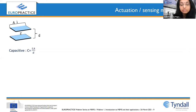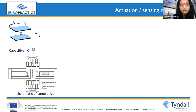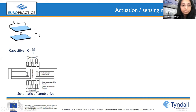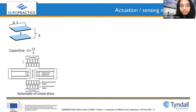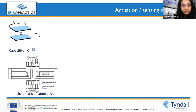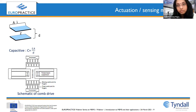Capacitive actuation or sensing is very commonly used in the comb drive structure. In an accelerometer, if this mass moves due to acceleration, each tooth pair acts as one capacitor, and all of them add up in parallel, giving good sensitivity. If the mass moves in the vertical direction, there is a change in overlap area, thereby a change in capacitance, which is taken for signal processing to get the sensing or actuation reading.